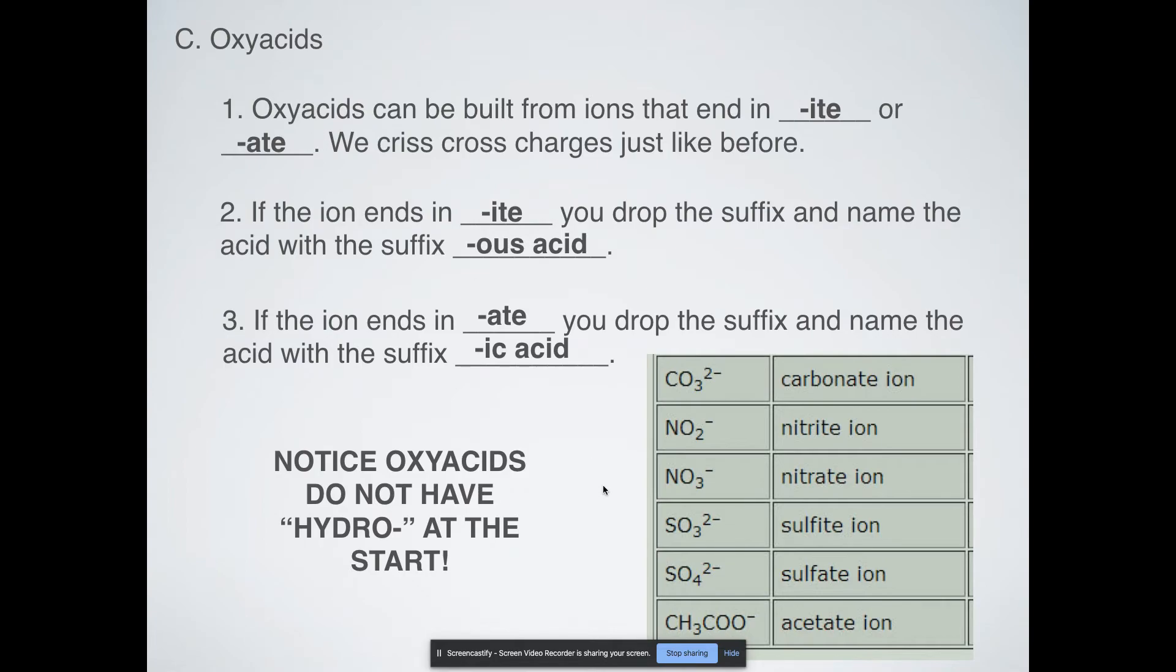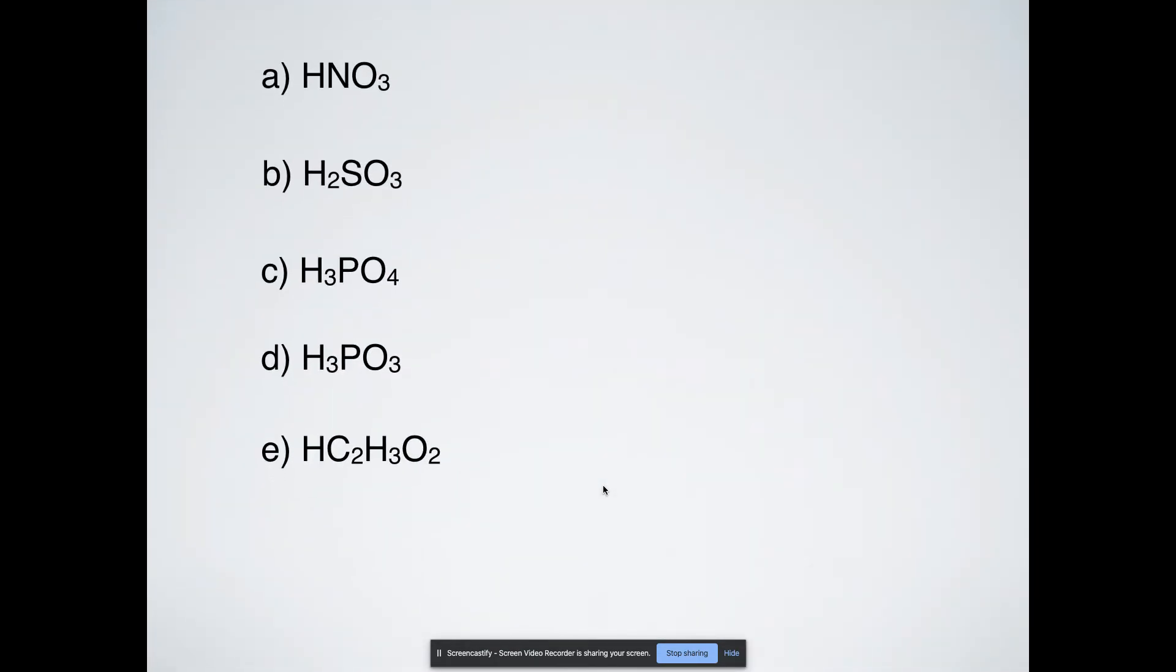Let's do some examples. These ones are normally a little bit more difficult. All of these are acids because they start with H. Next I have NO3. In case you forgot, NO3- is nitrate. So if it ends in -ate I drop the -ate and I add -ic acid. When I drop the -ate from nitrate that becomes nitric acid.